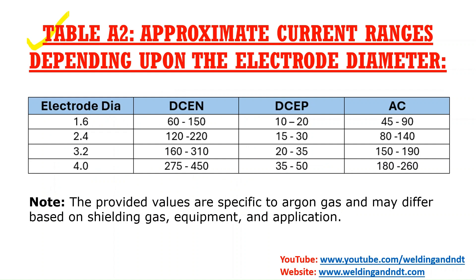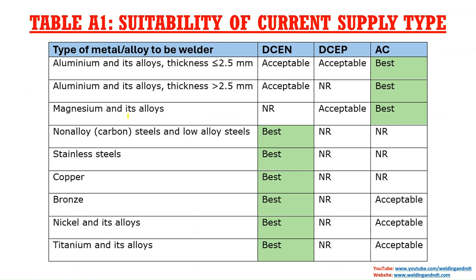I have taken some important points from Table A2: electrode diameters 1.6, 2.4, 3.2, and 4.0 mm, which are the most commonly used in TIG welding. DCEN is direct current electrode negative, DCEP is direct current electrode positive, and AC is alternating current. In these three configurations you can arrange your machine and electrode holder.